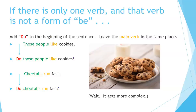If there is only one verb and that verb is not a form of 'be,' add 'do' to the beginning of the sentence. Leave the main verb in the same place. For example, 'Those people like cookies' — add 'do': 'Do those people like cookies?' 'Cheetahs run fast' — add 'do' to the beginning: 'Do cheetahs run fast?'